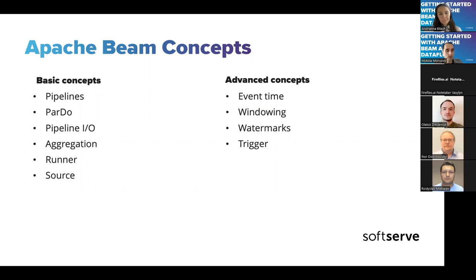Source is the data we read and use downstream in our pipeline steps. The main idea is that we make this abstraction and Apache Beam doesn't need to know where we read data from or how the data looks — it just exposes abstraction methods we implement to define the source. When using built-in transformations, this is already provided.